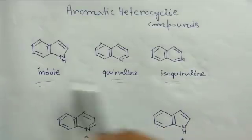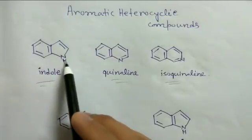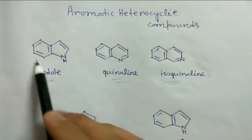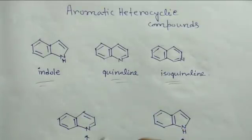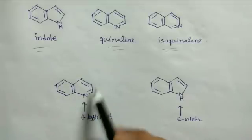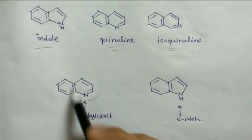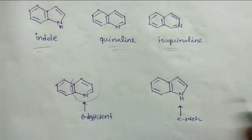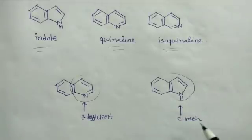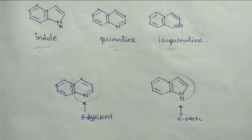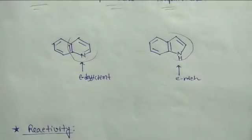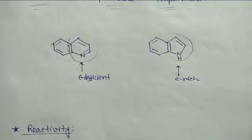Indole and quinoline are fused aromatic heterocyclic compounds. In indole, a pyrrole ring is fused with a benzene ring, and in quinoline and isoquinoline, a pyridine ring is fused with benzene. From this, we can observe that quinoline and isoquinoline have an electron-deficient heterocyclic ring because it is a pyridine nucleus, whereas in indole the heterocyclic ring is electron-rich because it is a pyrrole nucleus.